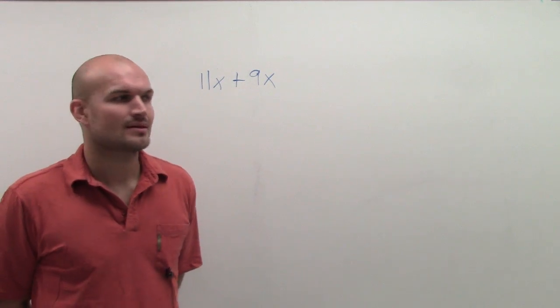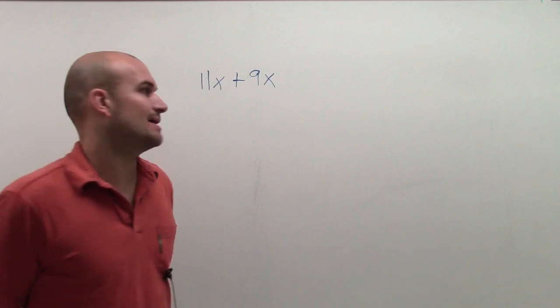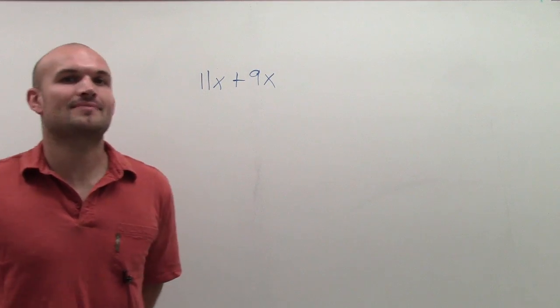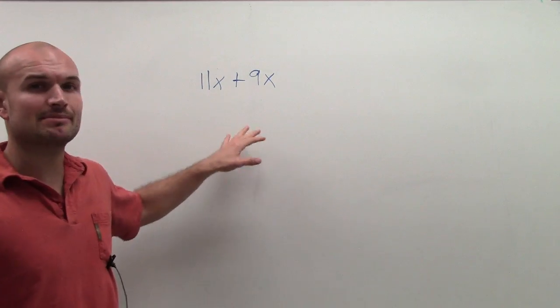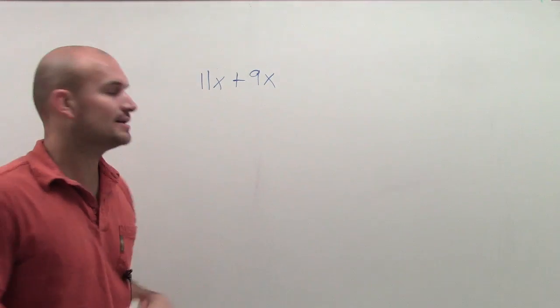They're like, you know, why is it we can add them? Why is it not 11x squared? Or why is it not 20? Or there's a lot of different answers that come up. But what I'm going to do is I'm going to show you by using the distributive property, why and how we combine like terms.